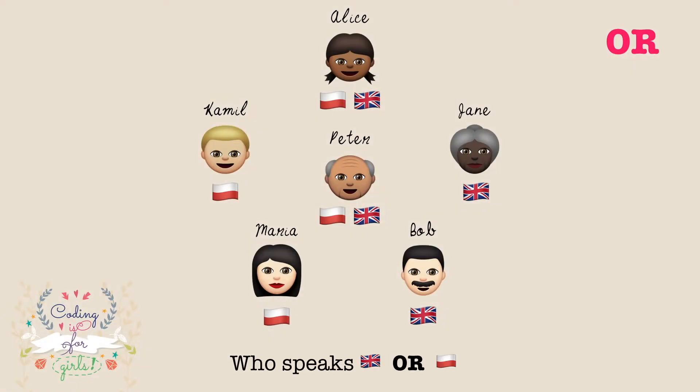With the OR operator, we check if at least one of the values is true. For example, we want to know if a person speaks either English or Polish. In this scenario, for both Alice and Bob this is true, and it is also true for Maria, who speaks only Polish.